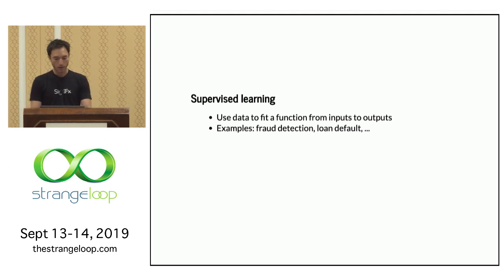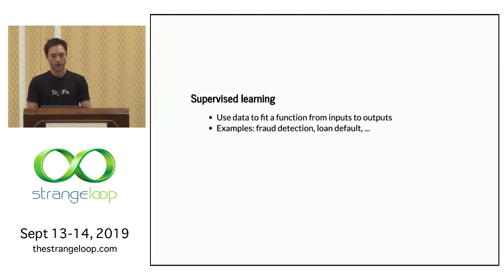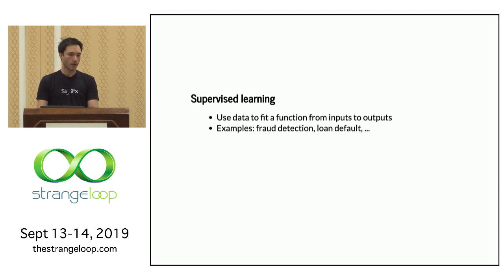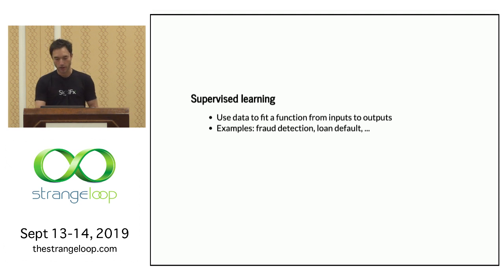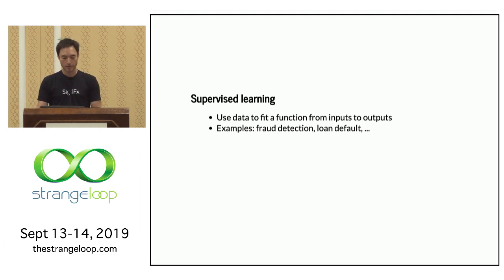Or maybe you're giving loans to people and need to decide, based on their credit history and other attributes which you are legally allowed to consider, the likelihood of default — whether or not they're likely to pay you back. The general mathematical framework is that we're trying to learn a function from inputs that can be observed to outputs that we care about.